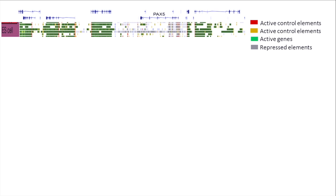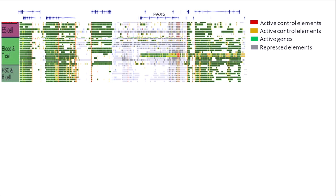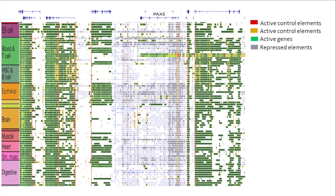Here I'm showing you a specific region in the genome around a very interesting gene called Pax5, which has a very important function in immune system biology. Focus on the colors: red and yellow means it's an active control element, green means it's an active gene, and gray means it's a repressed region. In embryonic stem cells, this particular locus is largely gray — it's inactive. If I switch to blood cells, various types of blood cells, you notice that in a particular set of T cells, the gene becomes active and a bunch of control elements also activate. In other cell types, that region is again repressed. From this, you can say that Pax5 potentially has a very interesting and cell-type-specific role in immune function.